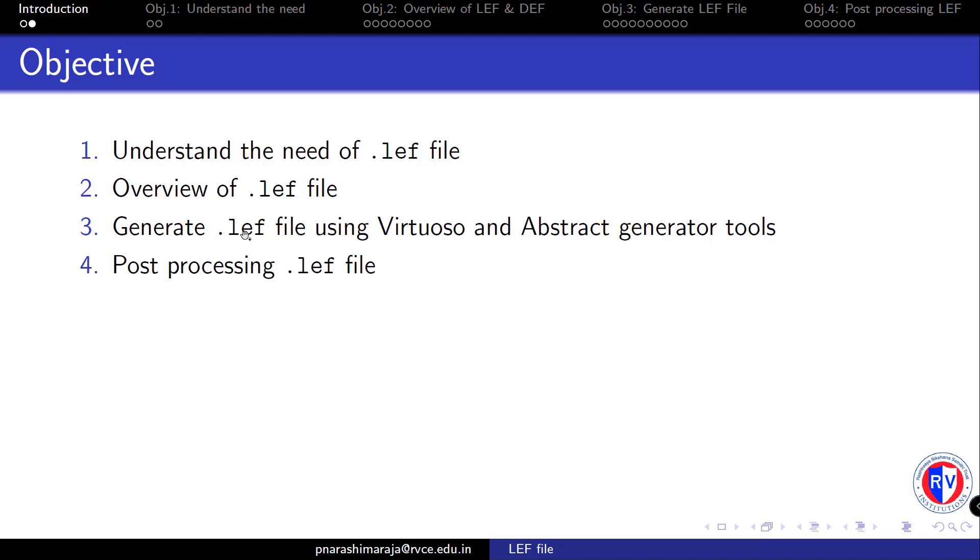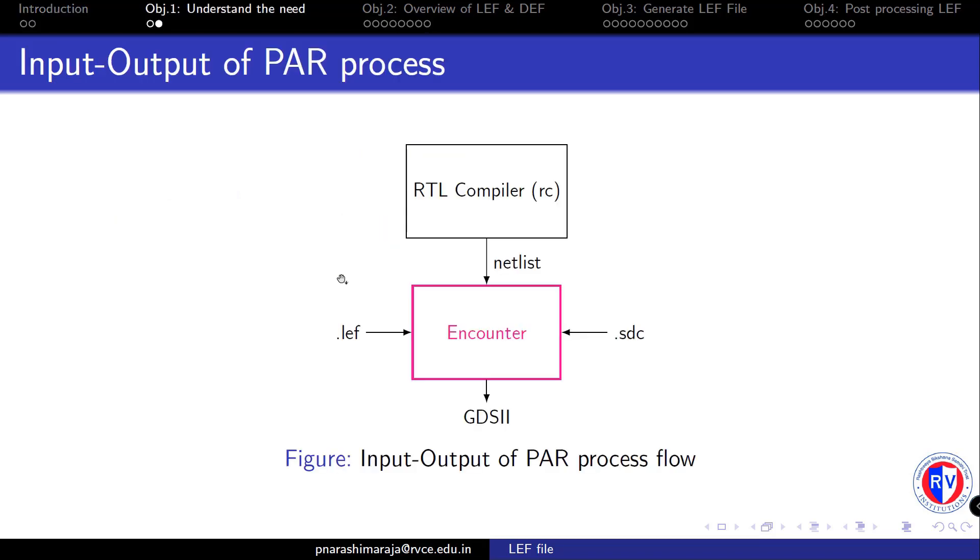Later we will be modifying some section of this dot LEF file such that the place and routing tool can acquire the required information about the layers and the cells. This modification is done through objective number four which is post processing of dot LEF file. As shown in the earlier video, the simplified version of ASIC flow is shown again here with an emphasis given to the place and routing process.